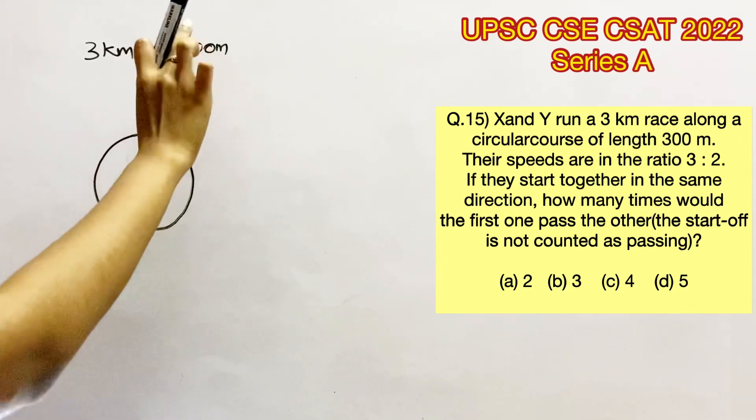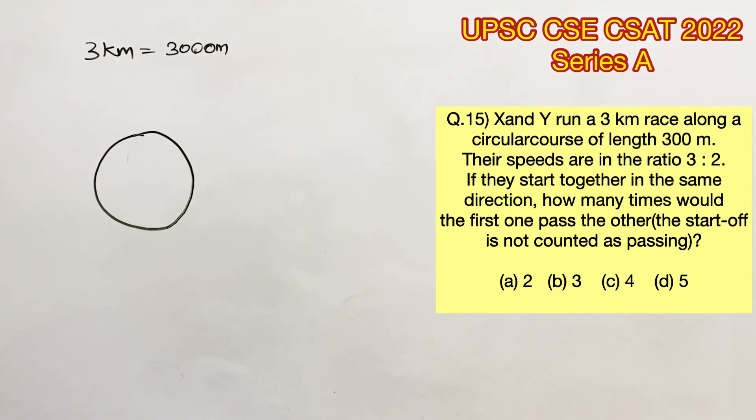Now let me just mark at every 100 meters in this circular track just for the purpose of explanation. So let's say that's the start point. This is 100, this is 200, and again to the start point it will become 300.